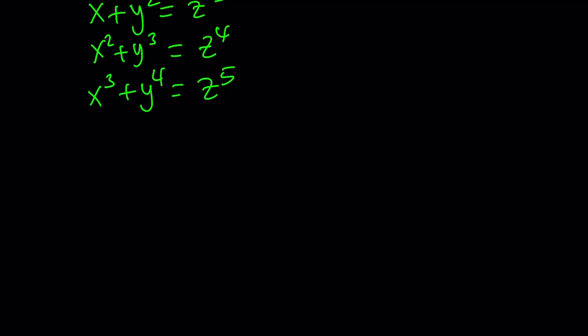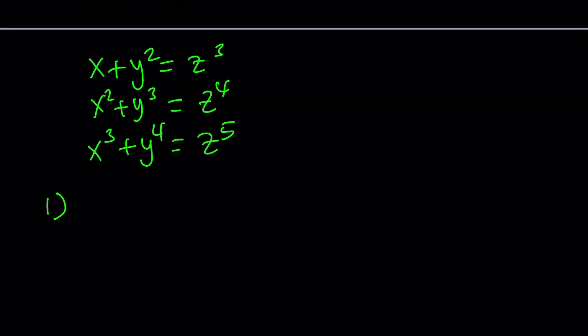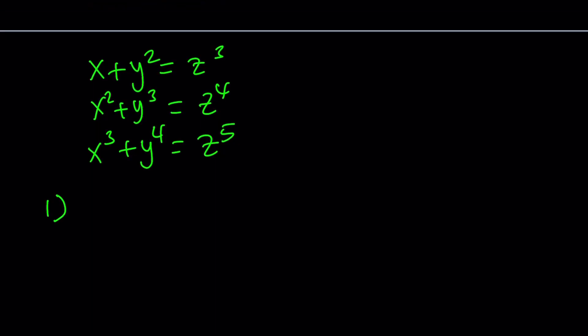I'll look at this problem case by case, starting with the most trivial case, and then we'll check every case out. The first case is basically when everything is equal to zero. Notice that if x, y, z are all zero, then this system is satisfied. We call this a trivial solution because there's really nothing interesting about it.